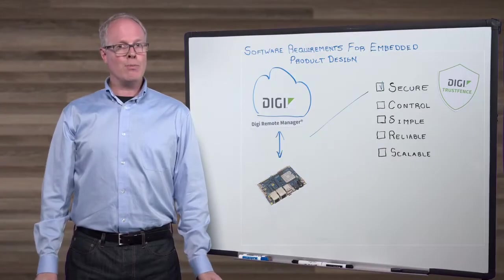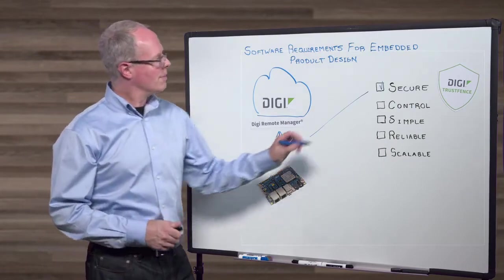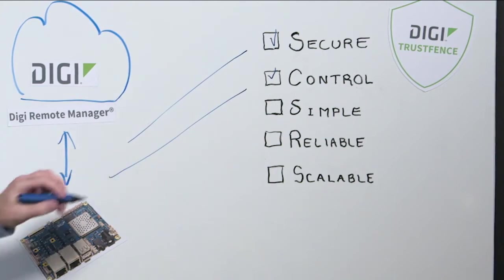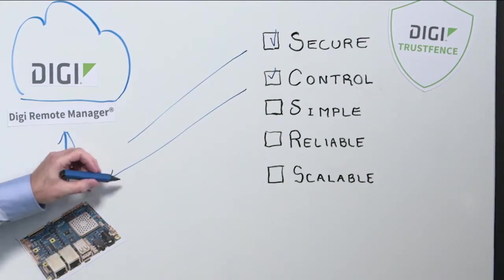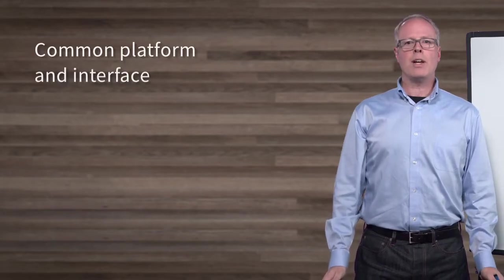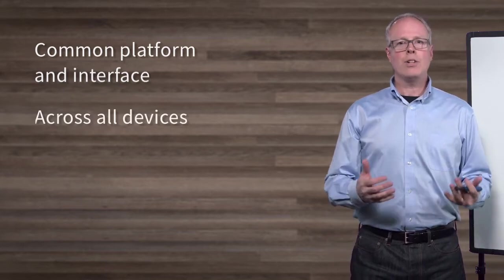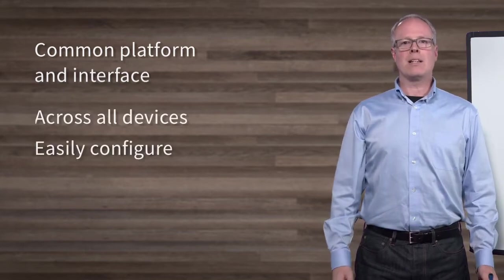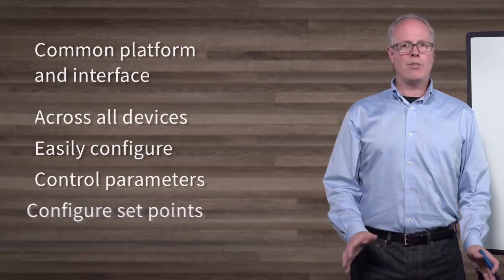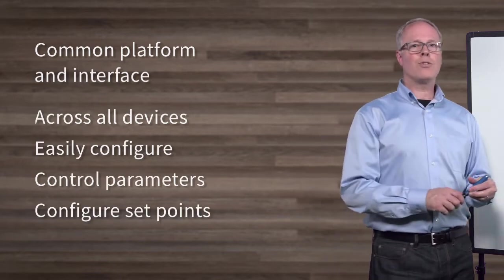Number two, you want to make sure you have control and have the ability to configure your thing, whatever you're building, and that it's simple to do that. You want a common platform and interface across as many devices as you need so you can configure them easily. This way, you can control network parameters or configure set points. Whatever you need to do, you're in control.